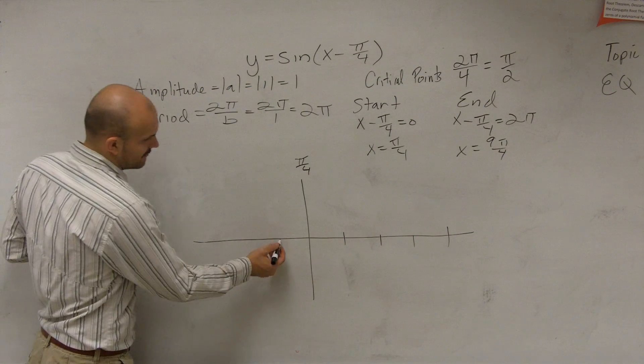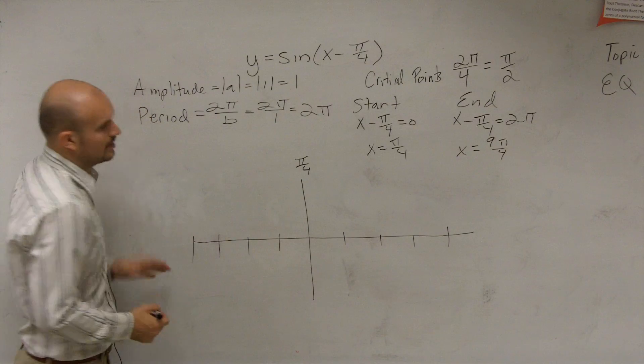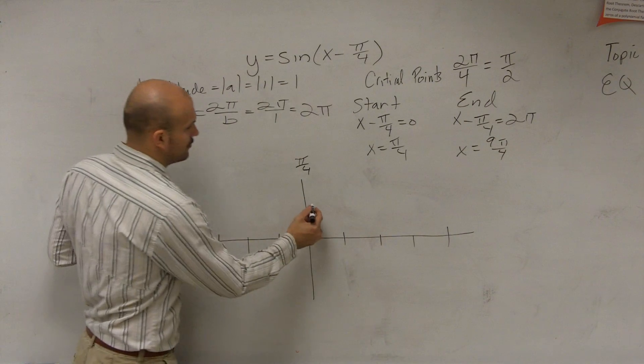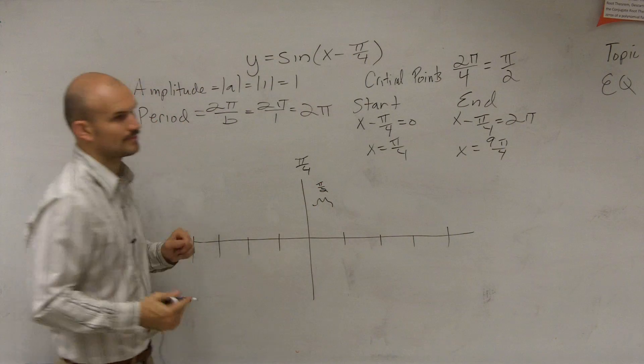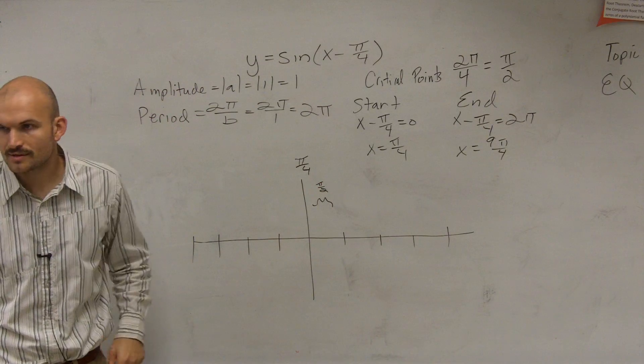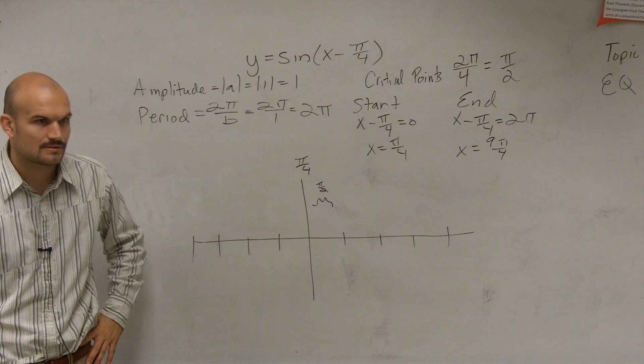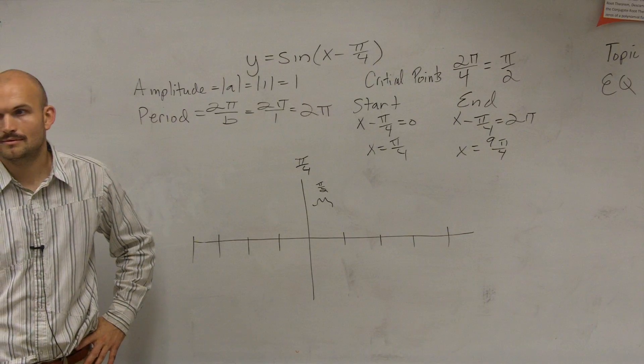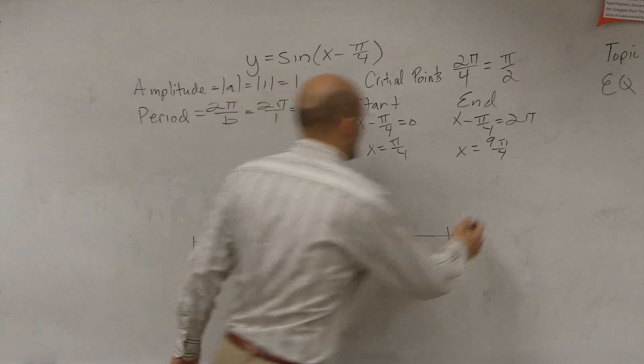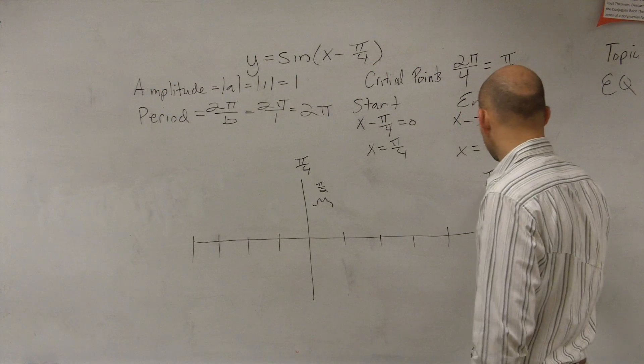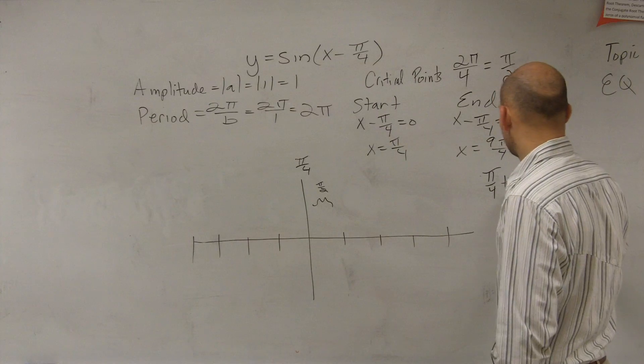Then we have another negative critical points, 1, 2, 3, 4. Now, remember, the distance between our critical points is going to be π halves. So what's π/4 plus π halves?